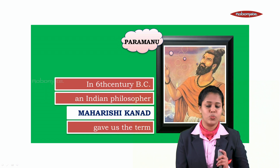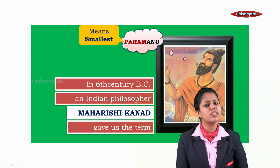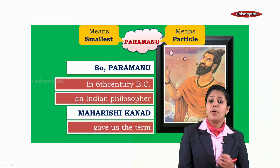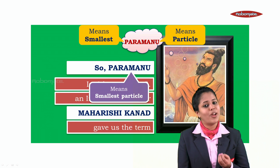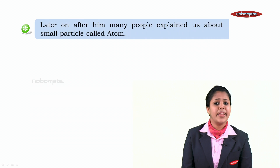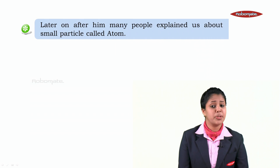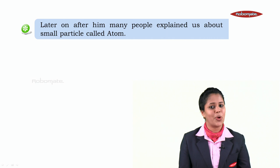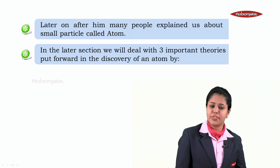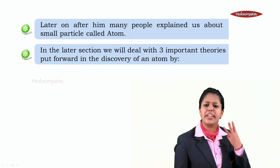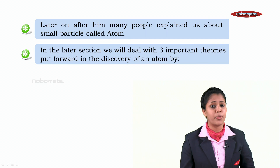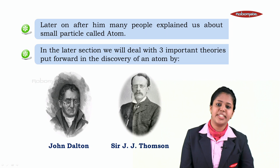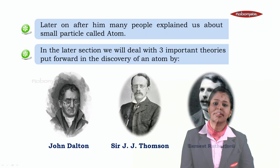Param means smallest, anu means particle, so paramanu means smallest particle. Later on, after Maharishi Kanat, many people explained to us about the small particle called atom. In the later section of this chapter, we'll deal with three important theories put forward in the discovery of an atom by John Dalton, Sir J.J. Thompson, and Ernest Rutherford.